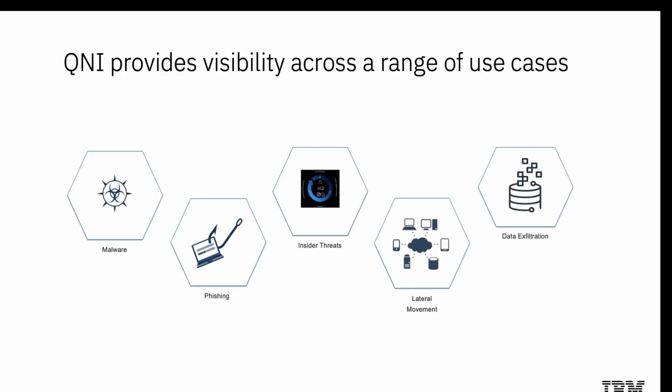QNI offers visibility across various use cases, such as detecting and analyzing malware. Malware often changes to avoid being detected. QNI can help you detect malware by analyzing file access and file activity, as well as by observing and analyzing artifacts such as names, properties, movement, and suspicious content.